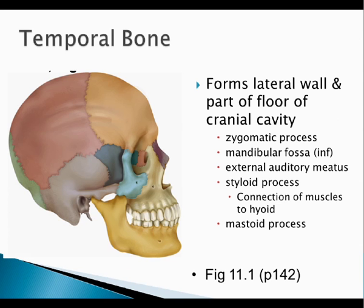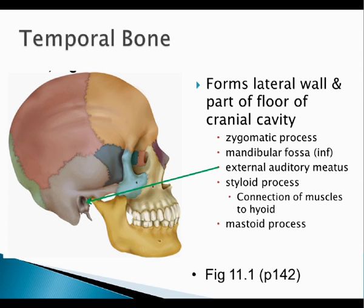Now we're getting to the temporal bone. On the temporal bone you need to be aware of the zygomatic process. The zygomatic process of the temporal bone pairs up with the temporal process of the zygomatic bone to make the zygomatic arch. Each process is named for the bone that it's in contact with. The zygomatic process of the temporal bone connects with the zygomatic bone to make the zygomatic arch — your cheekbones. The mandibular fossa is inferior; that's where your mandible articulates. The external auditory meatus — a meatus is another fancy word for canal — so this is your external ear canal. You also have an internal auditory meatus visible from an interior view.